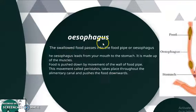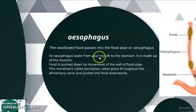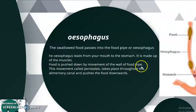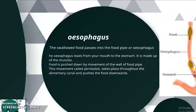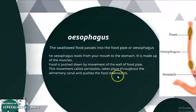The esophagus is the second part that connects the mouth to the stomach. Swallowed food passes into the food pipe, also called the esophagus, which leads from the mouth to the stomach and is made up of muscles. Food is pushed down by the movement of these muscles, and that movement is called peristalsis. Peristalsis takes place throughout the alimentary canal — in the esophagus, stomach, small intestine, and large intestine — helping to push food downward.